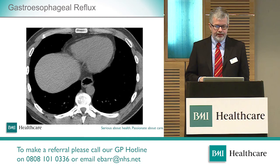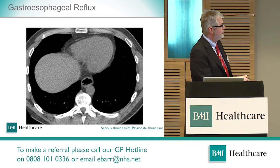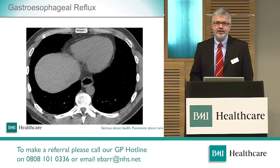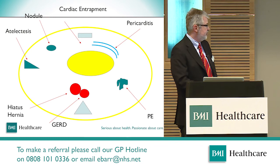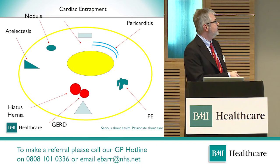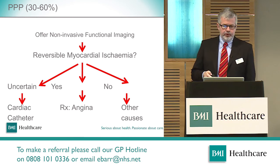CT is also quite useful for non-cardiac things. In these transverse sections of the body you can see the oesophagus and evidence of gastro-oesophageal reflux disease. The advantage of CT is that when looking for atypical symptoms it's quite useful — it can pick up other causes of chest pain including reflux, hiatus hernias, pulmonary embolism, pericarditis, and lung pathologies.